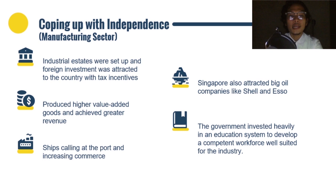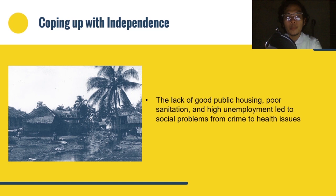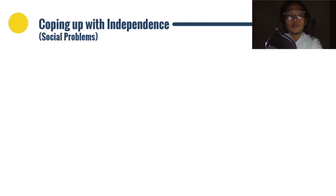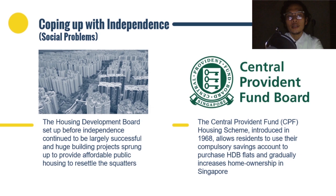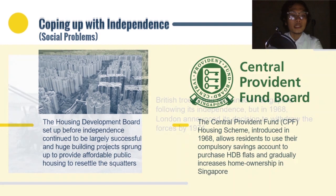The lack of good public housing, poor sanitation, and high unemployment led to social problems from crime to health issues. The Housing Development Board, set up before independence, was largely successful, and huge building projects sprung up to provide affordable public housing. Within a decade, the majority of the population had been housed in these apartments. The Central Provident Fund (CPF) housing scheme introduced in 1968 allowed residents to use their compulsory savings accounts to purchase HDB flats, gradually increasing home ownership. British troops remained in Singapore following independence, but in 1968, London announced its decision to withdraw the forces by 1971.